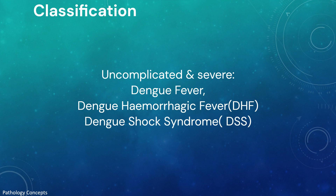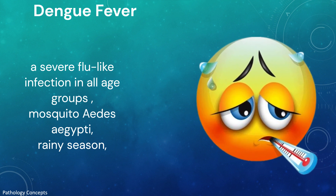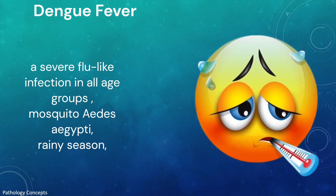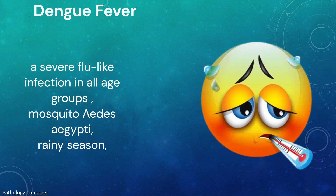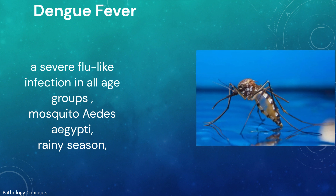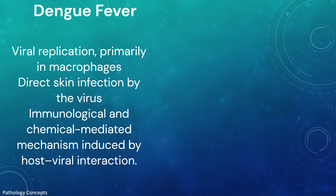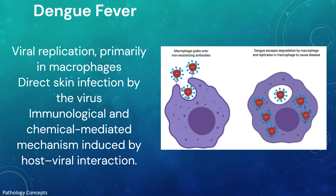Dengue is classified into uncomplicated and severe dengue: dengue fever, dengue hemorrhagic fever, and dengue shock syndrome. It is a severe flu-like infection that involves individuals of all age groups including infants, children, adolescents, and adults. Transmission occurs via the Aedes aegypti mosquito and chiefly occurs during the rainy season.